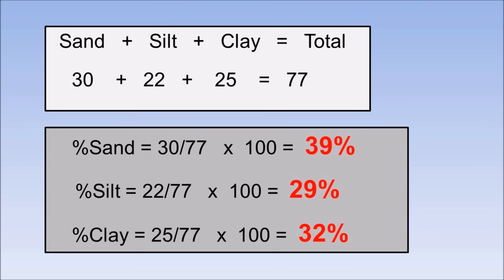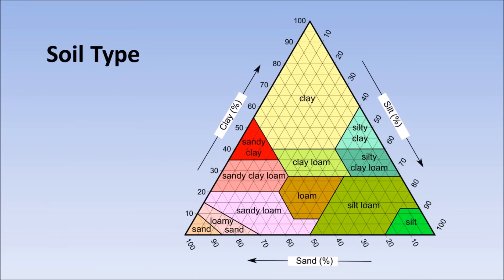These numbers tell you how much sand, silt, and clay you have, but we can take this one step further and figure out the type of soil you have. To do that, we need to have a look at the soil texture triangle as pictured here.